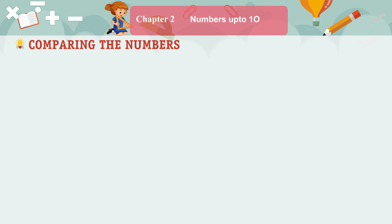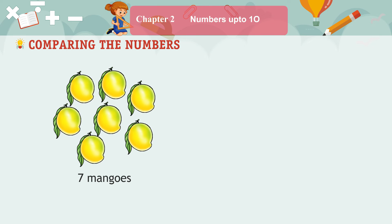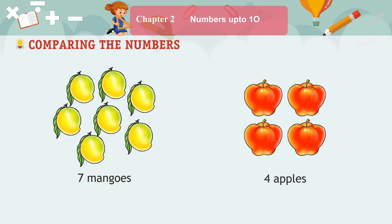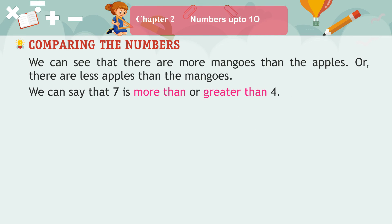Comparing the Numbers. 7 Mangoes, 4 Apples. We can see that there are more mangoes than the apples, or there are less apples than the mangoes.